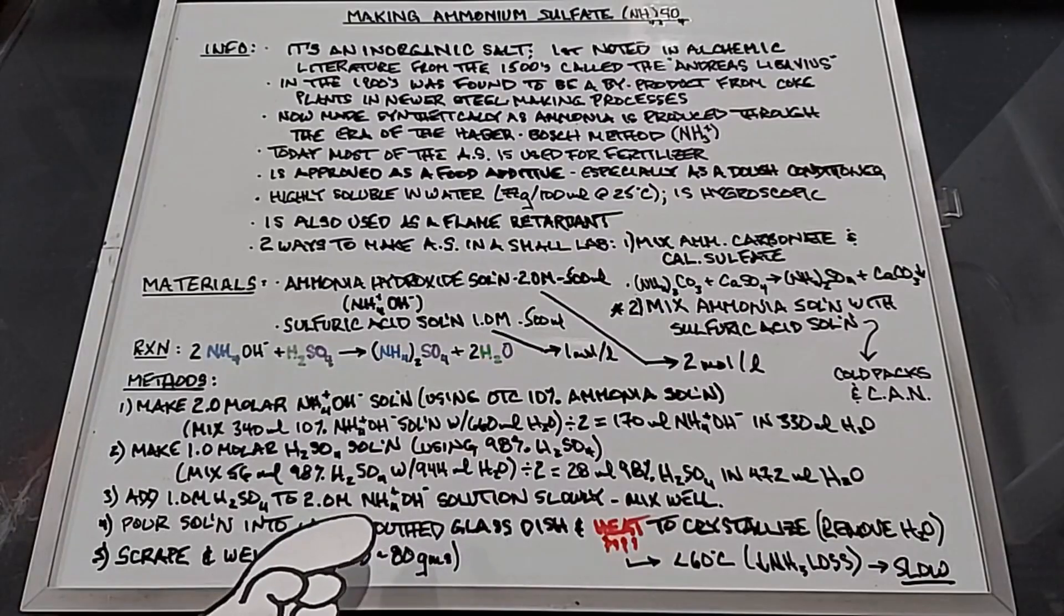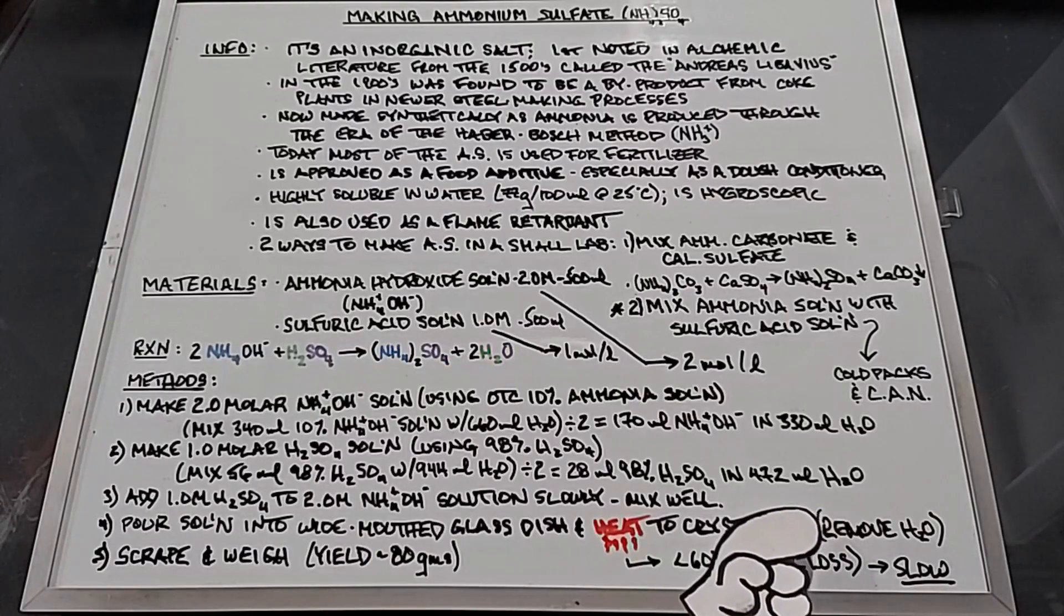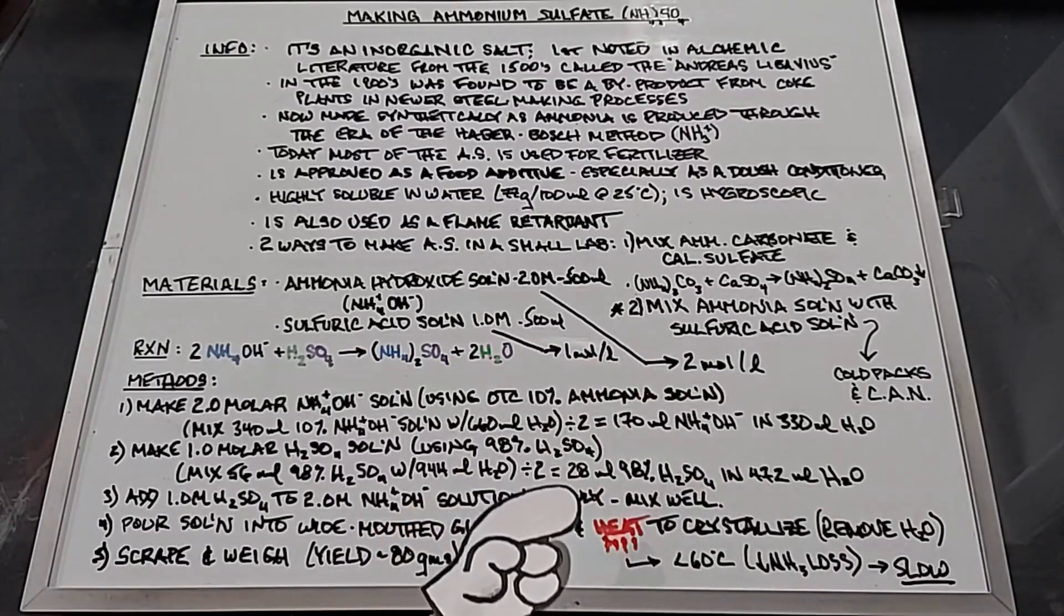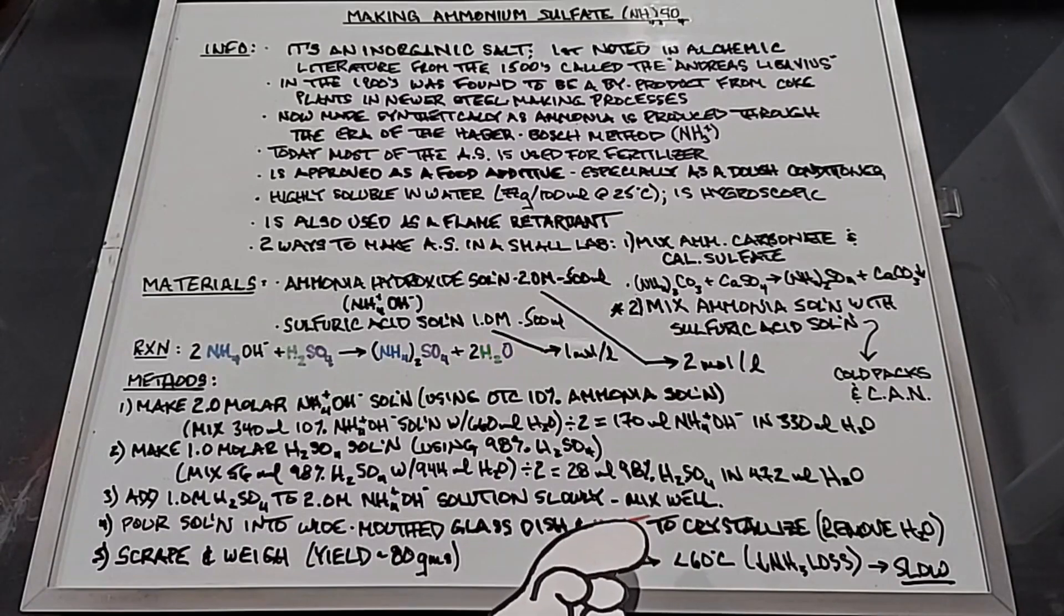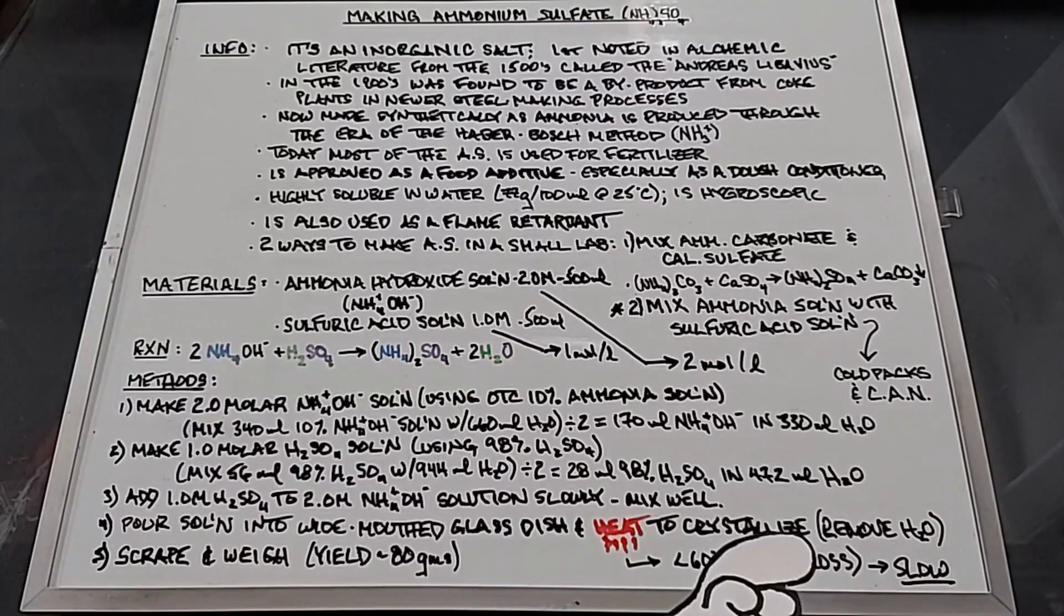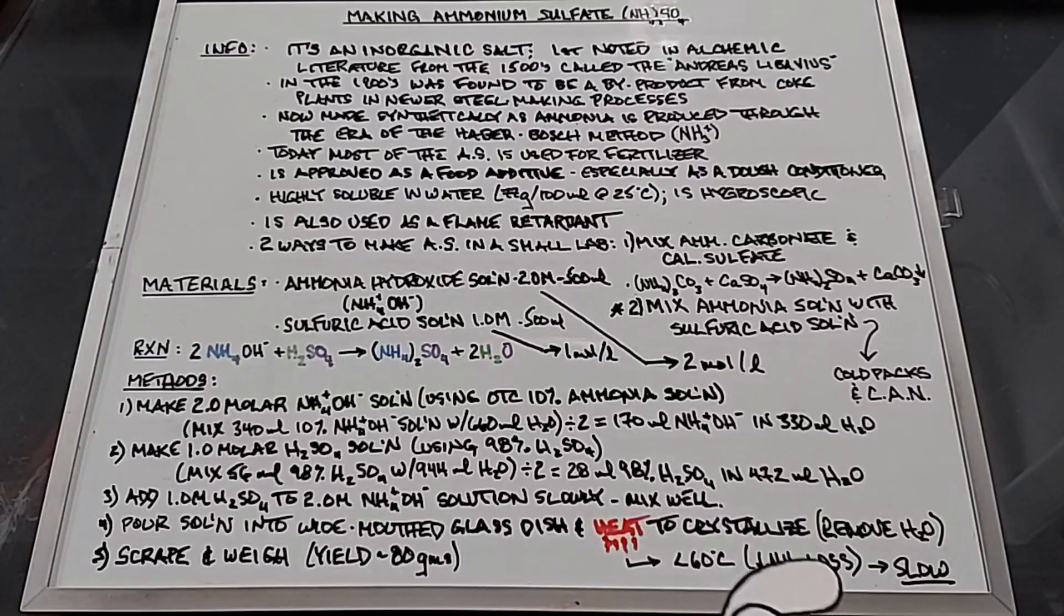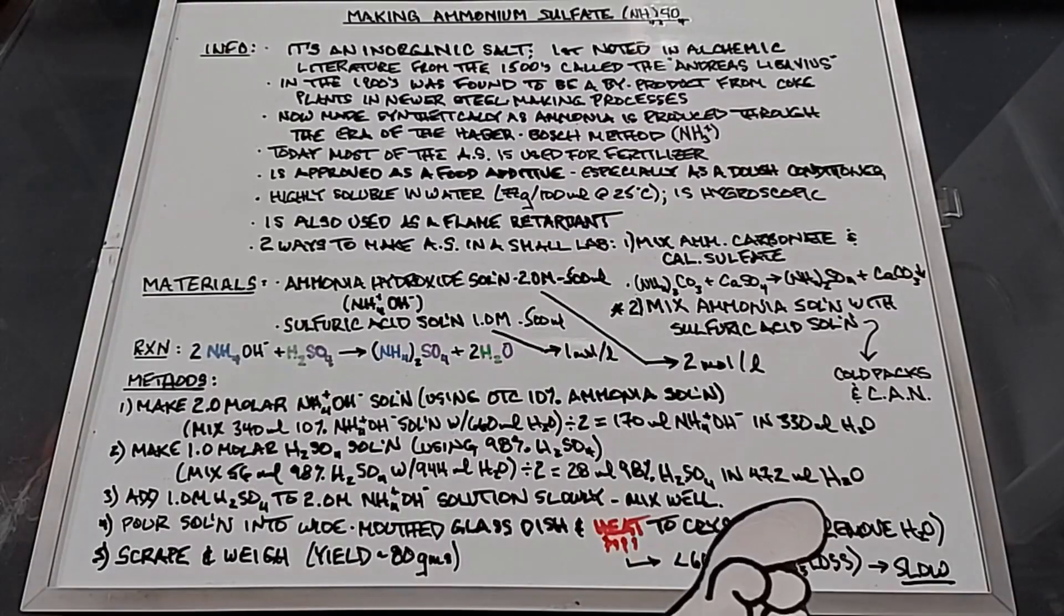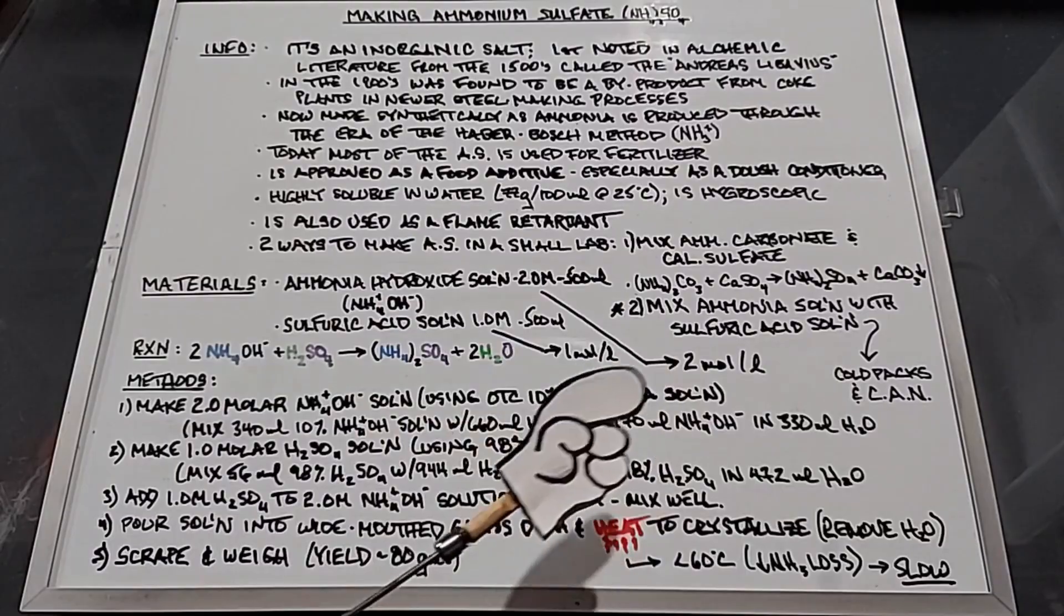Once the mixing and the pH are done properly we want to pour the solution into a wide mouth glass dish and heat it to crystallize it, basically removing the water. While we're heating this we don't want to really go above 60 degrees Celsius because at 70 to 80 degrees Celsius you start to drive off the ammonia gas. We're going to keep it below 60 and that decreases our ammonia loss. It's going to take a bit to get rid of all the water.